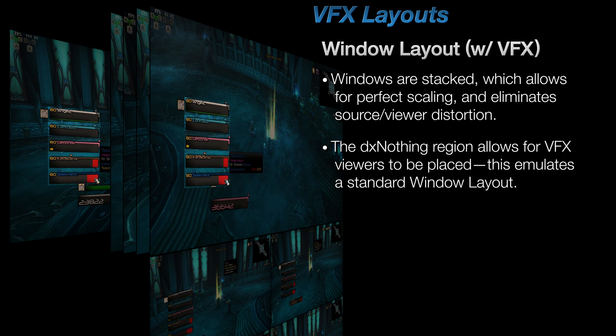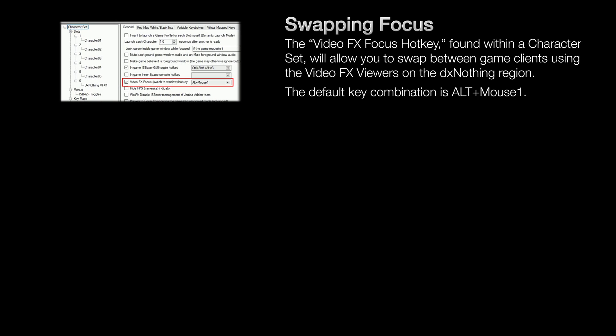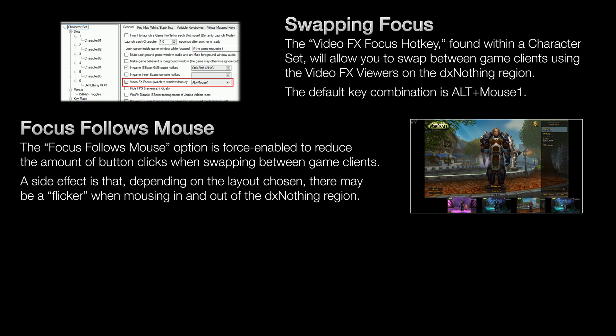Finally, there are a few last-minute details to cover. In order to swap focus between game clients via clicking with your mouse as if you were using a standard window layout, you would use the Video Effects Focus hotkey found within your character set. The default key combination is Alt+Mouse1, where Mouse1 is the left button of your mouse. In addition, when using a basic wizard-generated VFX layout, the Focus Follows Mouse option is forced on. This is normally required to minimize the amount of button clicks used to swap between game clients, but a side effect is that you may experience a flicker when moving your mouse in and out of the DX Nothing region.